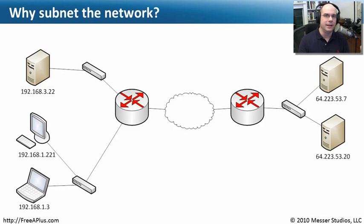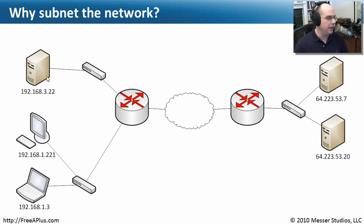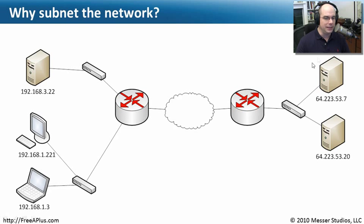Why do you need a subnet mask? Can you just type in the address and be done? The problem is that our networks are not all in one place. You might have a network in one location with switches that connect to routers that go across the internet to yet another set of routers, where on the other side we now have a completely different group of IP addresses.